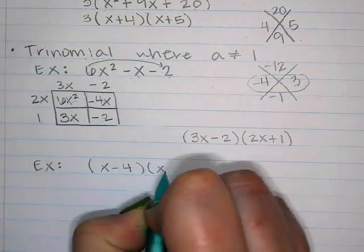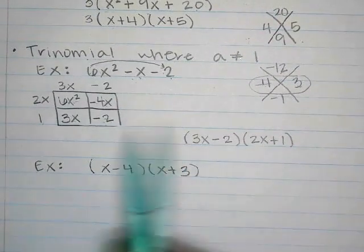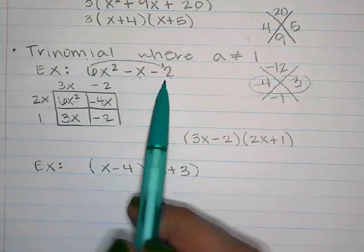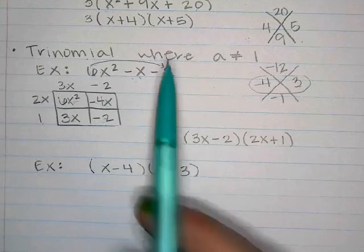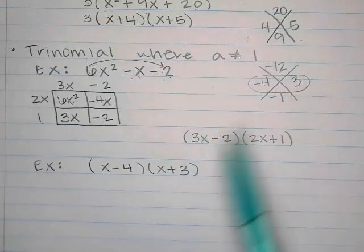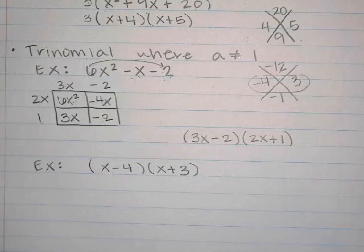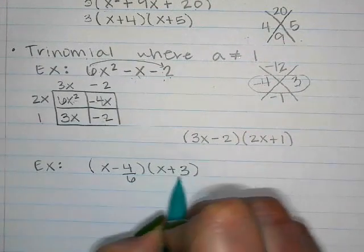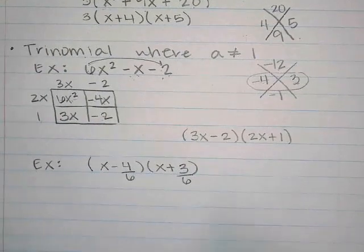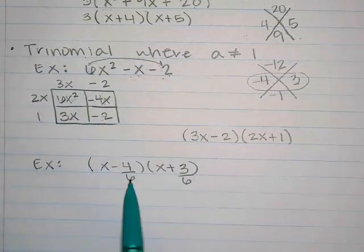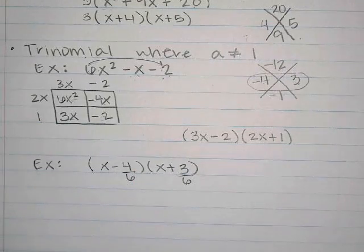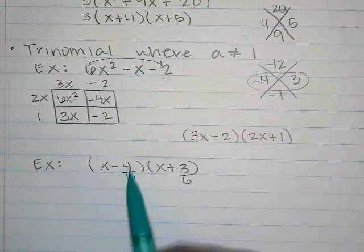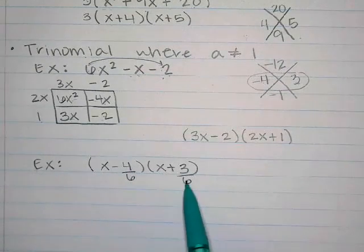We slid the 6 to the negative 2, multiplying them together. So if we multiplied by 6, we also need to divide by 6 to undo that. We divide both numbers in the parentheses by 6. That's where the name slide divide comes from.